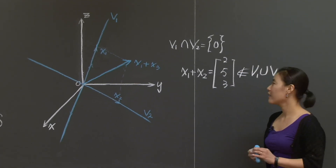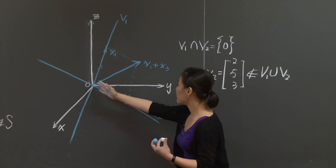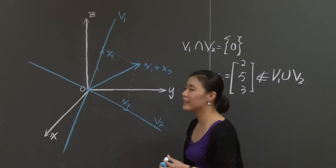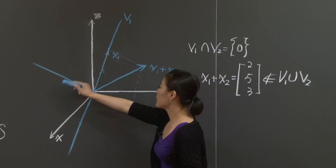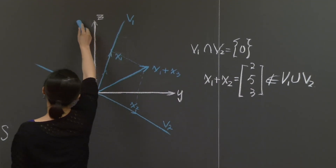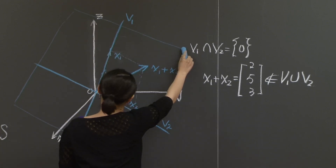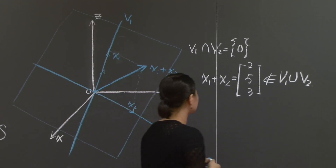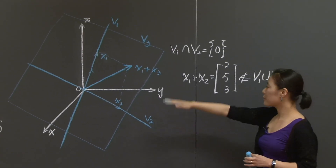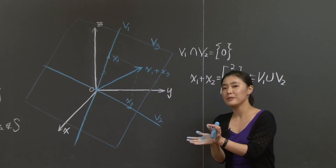Now let's identify v3. Since we have to include x1 plus x2, and more generally we can take any elements from these two lines, we're actually including every vector on the plane spanned by v1 and v2. So v3 is this entire plane spanned by v1 and v2. That's reasonable: the subspace generated by two lines in R3 spans a plane in R3.